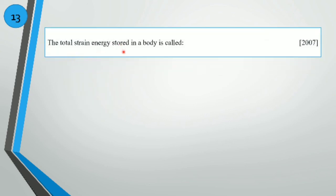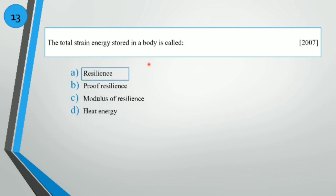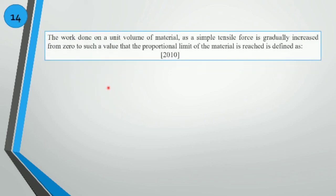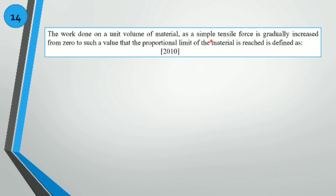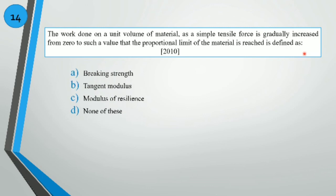The total strain energy stored in a body is called resilience. The work done on a unit volume of material as a simple tensile force is gradually increased from zero until the proportional limit is reached is defined as the modulus of resilience.